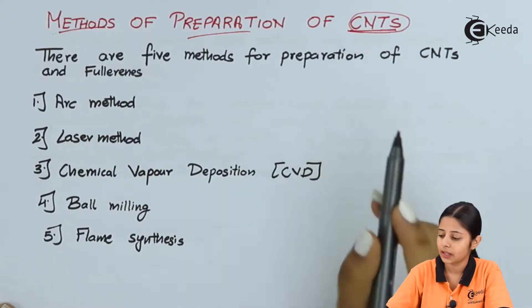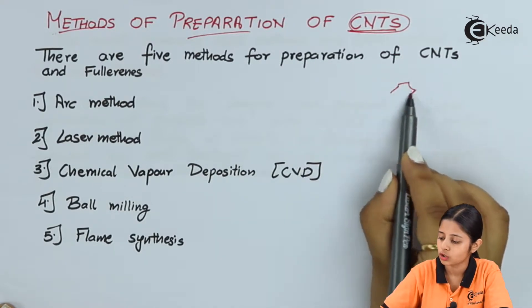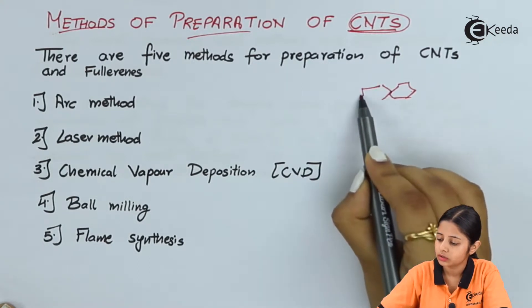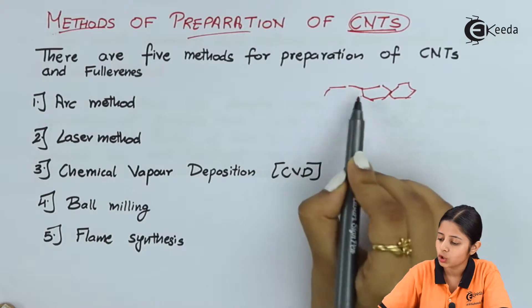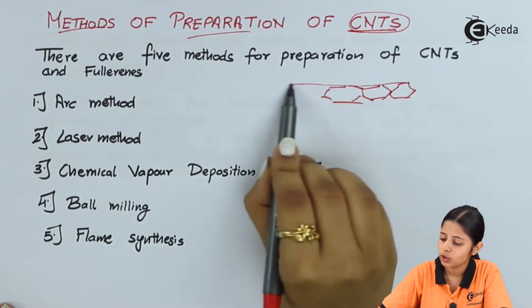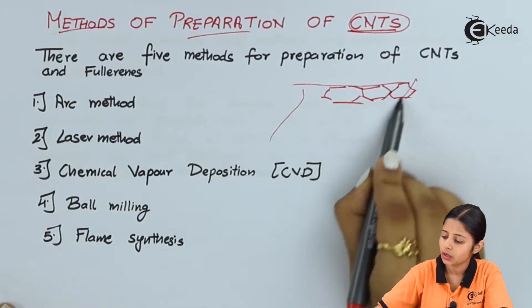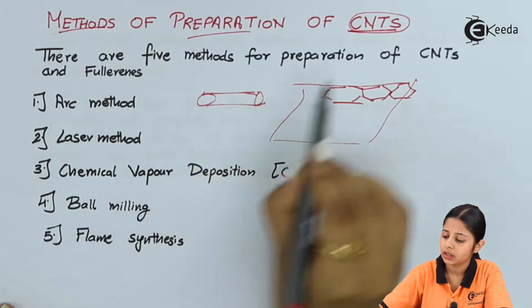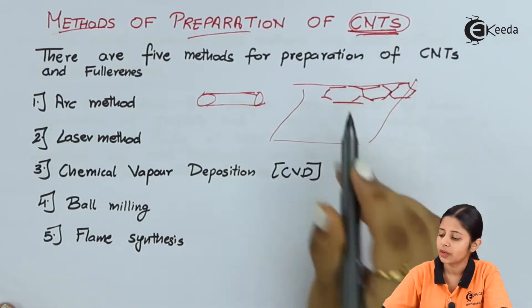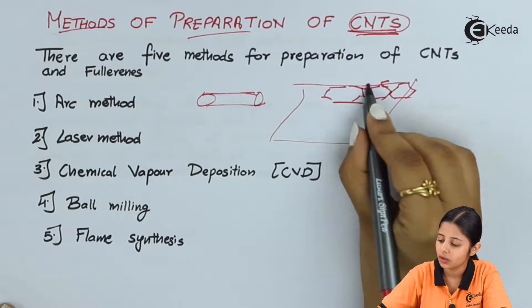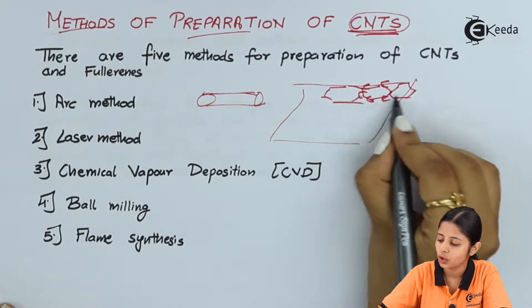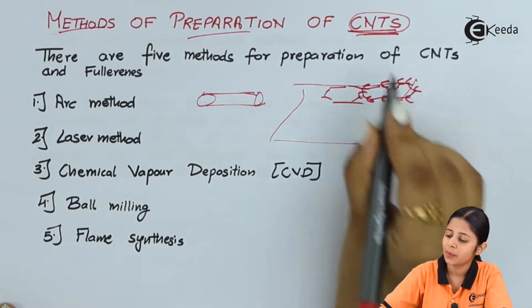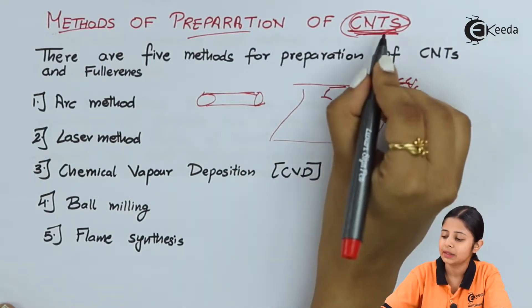When we talk about carbon nanotubes, we see hexagonal structures connected to each other forming long sheets. There will be long sheets of carbon hexagonal structures, and we roll these sheets into tubes — these tubes are nothing but carbon nanotubes. All the corners or vertices are made up of carbon, with carbon-to-carbon links everywhere, meaning the carbon nanotube is entirely made up of carbon.